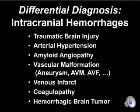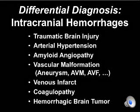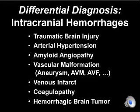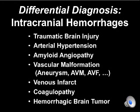This concludes this lecture. The entities we have reviewed are: traumatic brain injury, arterial hypertension, amyloid angiopathy, vascular malformation, venous infarct, coagulopathy — which can mimic anything — and hemorrhagic brain tumor. Also remember mimicking entities such as pseudo-subarachnoid hemorrhage. Thank you for your attention, and I'll see you for the next presentation.